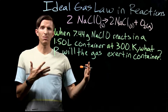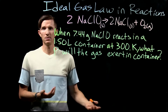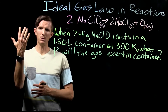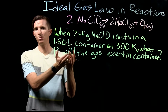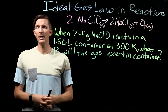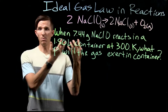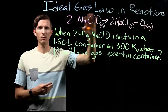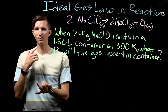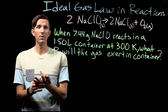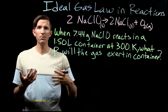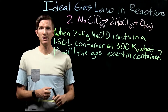Now what we want to do is apply this to a chemical reaction. Just like we've used molar mass to convert between moles and mass — where mass is our measurable quantity for a solid or liquid — we want to use the ideal gas law to connect moles from a chemical equation to other physical properties of a gas: volume, temperature, or pressure.